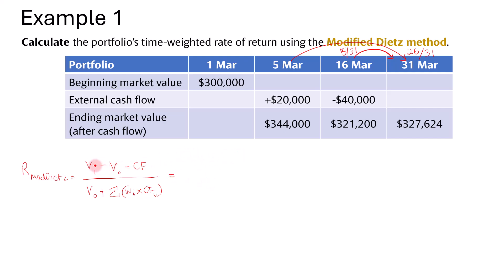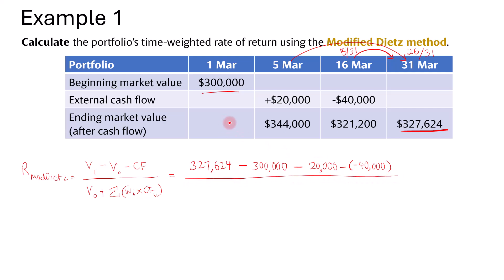So the numerator is 327,624 minus the beginning value 300,000, then minus the external cash flows: minus 20,000, and minus negative 40,000. Take note that the weights are not applied to the external cash flows in the numerator. Then we divide by the initial value of 300,000, plus the weighted cash flows: 26/31 multiplied by $20,000, plus 15/31 multiplied by negative $40,000.